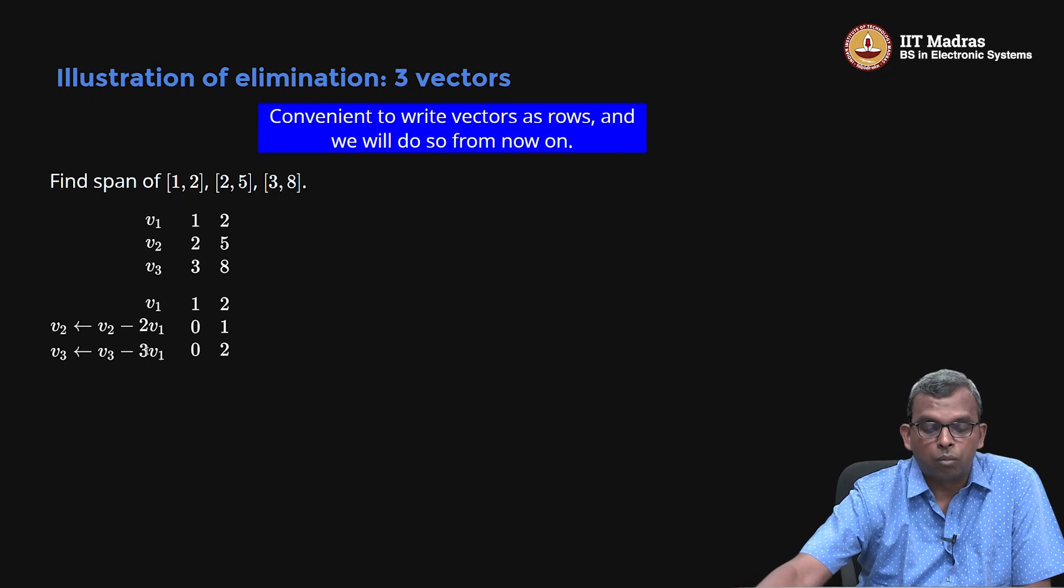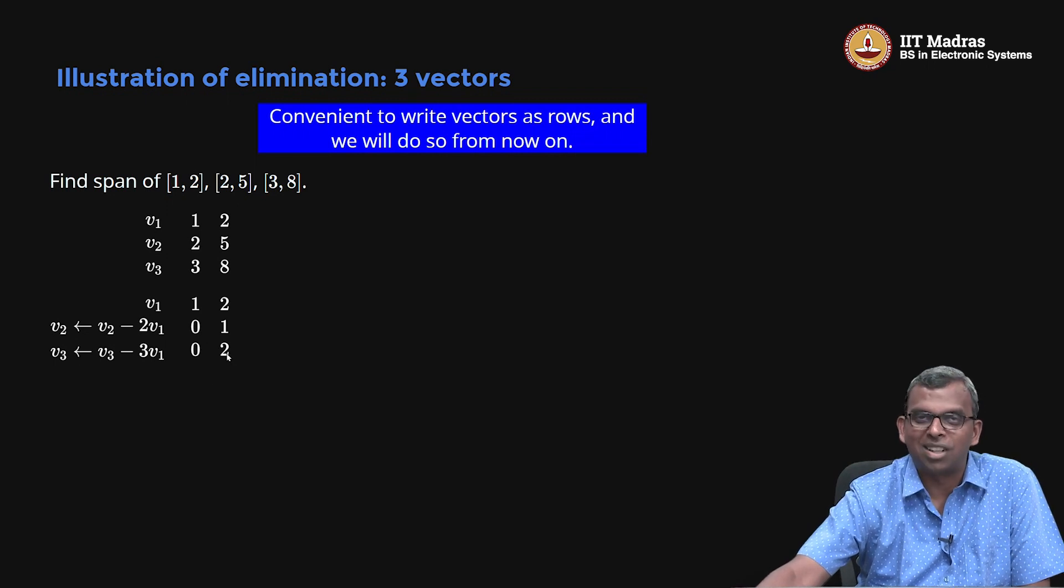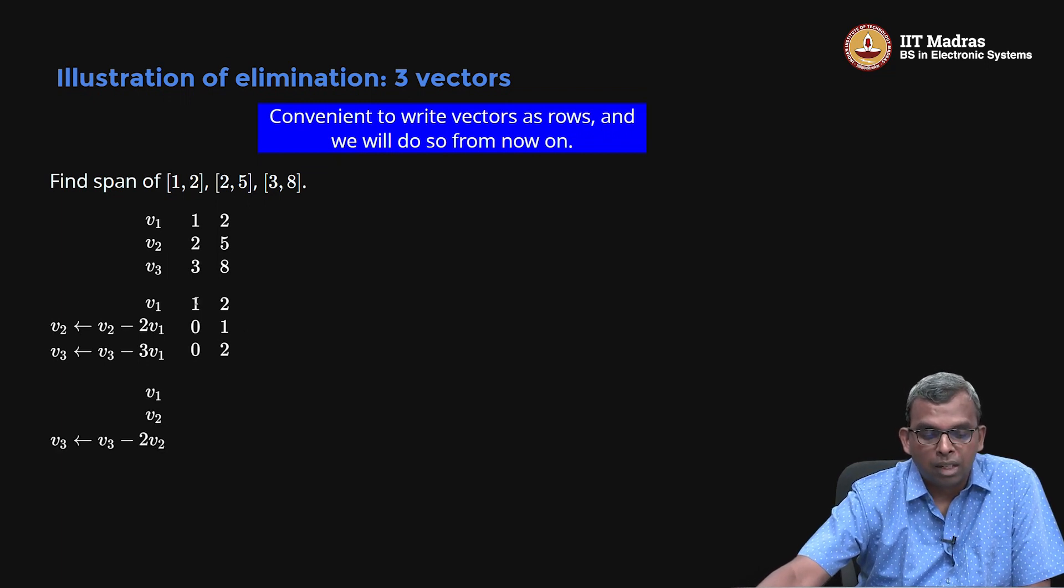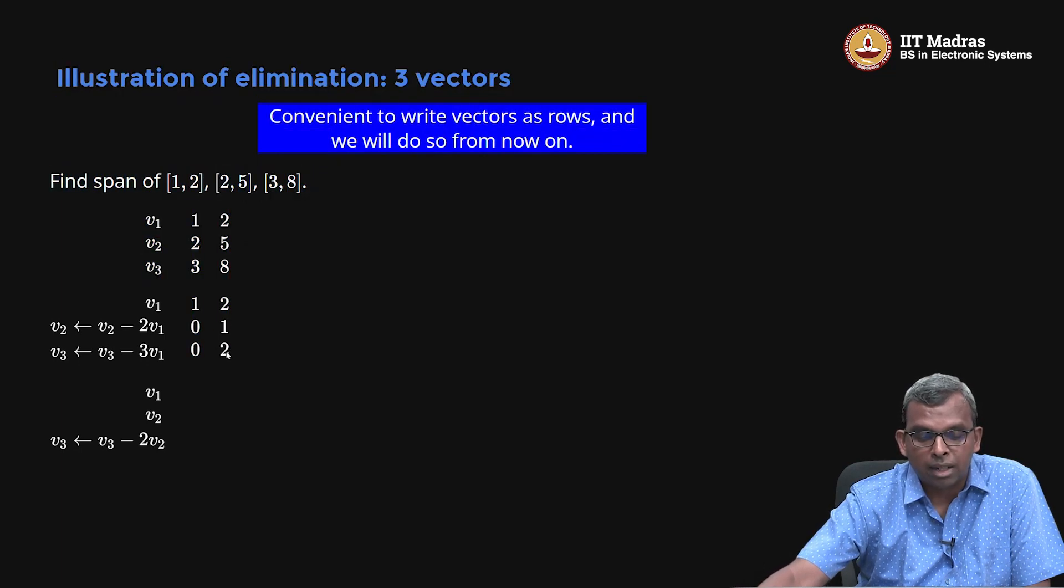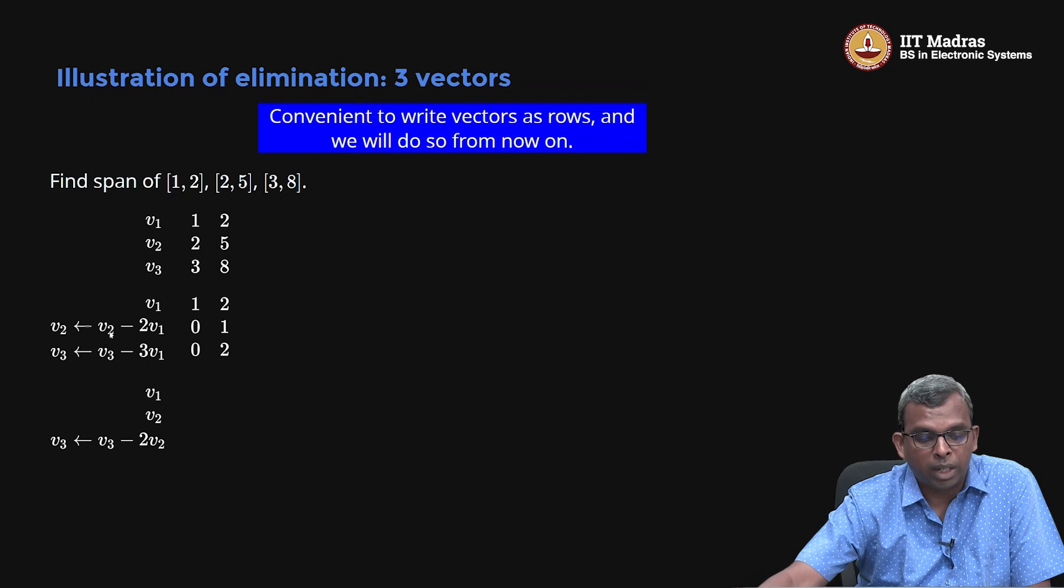So that is my first step in the elimination. Notice how it has become 1, 2, then 0, 1, then 0, 2. Now the question is, I have finished eliminating here. How do I proceed? We can do more elimination. Why not? What worked here may also work on this side. So I have got 1, 2 here and 0, 1 here. Notice this 1 is there. This 1 is there and then this 2 is there. I can use this 1 and eliminate this 2 also. I can do, notice what I have done here. v3, this new v3 that I have here, 0, 2, I am going to replace as v3 minus 2v2. Remember v2 I renamed as this 0, 1. So v3 minus 2v2. This 0 remains 0, nothing will change. This 2 minus 2 into 1 will become 0 again. So I get 1, 2, then 0, 1, then 0, 0.